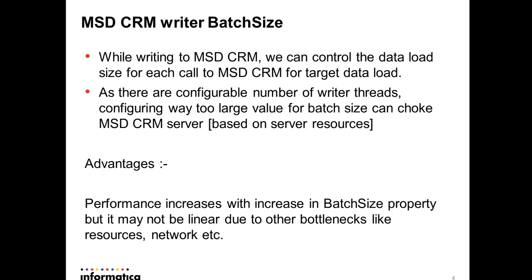Now we move on to the MSG CRM writer batch size. When you are loading data into CRM using the Informatica Adapter, you need to have some control on the size of the load — that is, how much data you are pushing with each request to MSG CRM — because there can be a limit on the number of requests that can be processed at the CRM. For example, when you load records to CRM, it may kick in some plugins behind the scenes, which can take time to process. If you are pumping data from Informatica to CRM too aggressively, it can choke the CRM server and actually bring down performance. We have to be very careful when optimizing performance and throughput using these parameters.